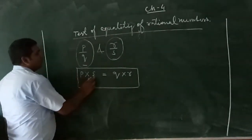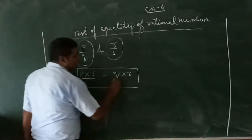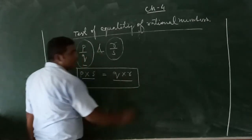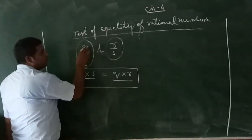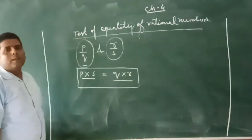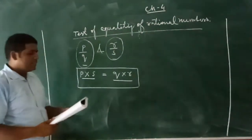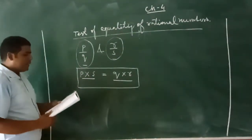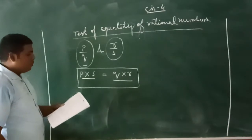So the condition is: P by Q equals R by S if P into S is equal to Q into R. So we can say the given two rational numbers P by Q and R by S are equal.